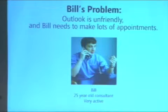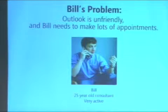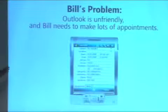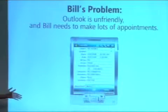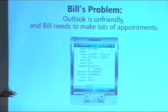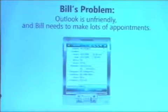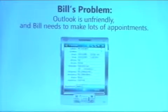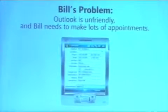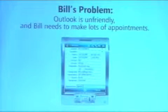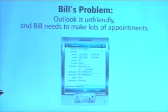That means every week, Bill has to go through and fill out the 15 form fields in Microsoft Outlook just to have lunch with his mother, even if it's the same event every single week. Bill doesn't want to have to do that. So what can he do?